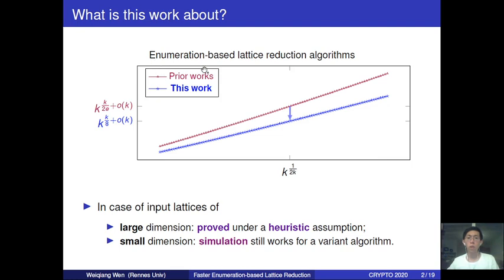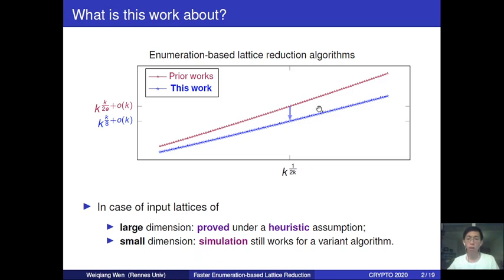In more detail, we give a new elimination-based lattice reduction, and compared to the prior ones of the same type, we can reach the same quality while with a smaller time complexity than before. When the input lattice has a large enough dimension, we can prove this improvement under a heuristic assumption, and when the dimension is small, we can still show under our assumption that this improvement still works for a variant algorithm.